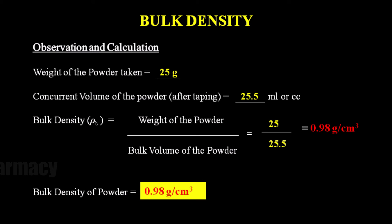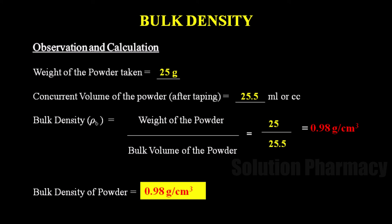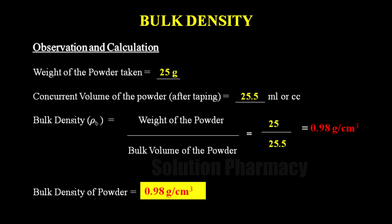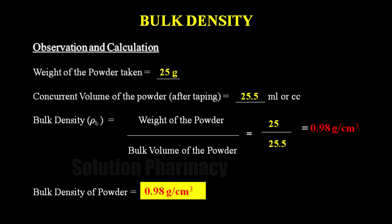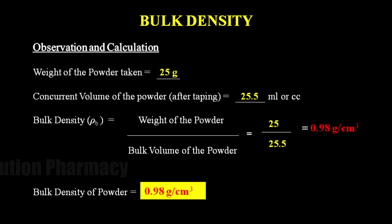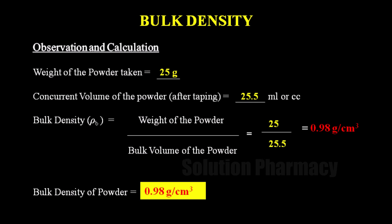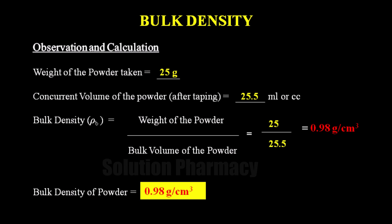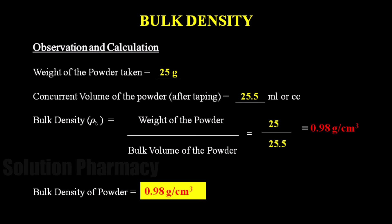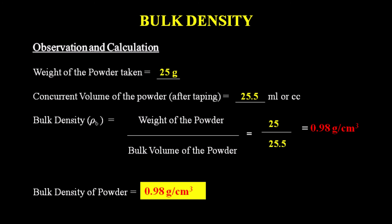If a bulk density apparatus is not available, we can determine bulk density manually. Take a 100 ml measuring cylinder, then fill it with the powder — about 50 grams for heavy powder or 5 to 10 grams for light powder — after sieving and weighing. Then the measuring cylinder is dropped onto a hard wooden surface three times from a height of one inch at an interval of two seconds. Repeat this process to get concurrent readings. Normally a concurrent result can be obtained if the cylinder is tapped 500 times; the concurrent volume will be the final bulk volume to calculate bulk density.